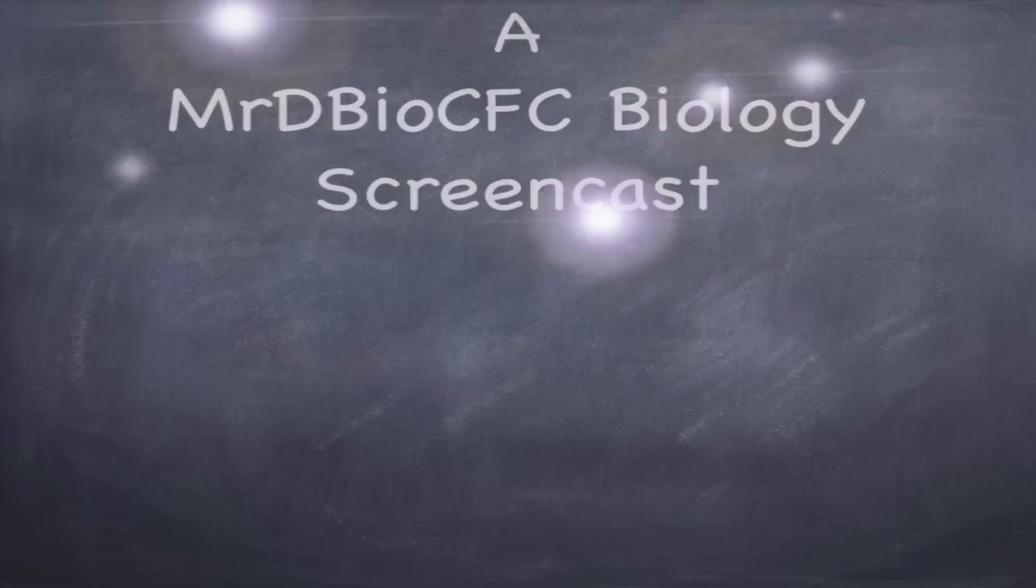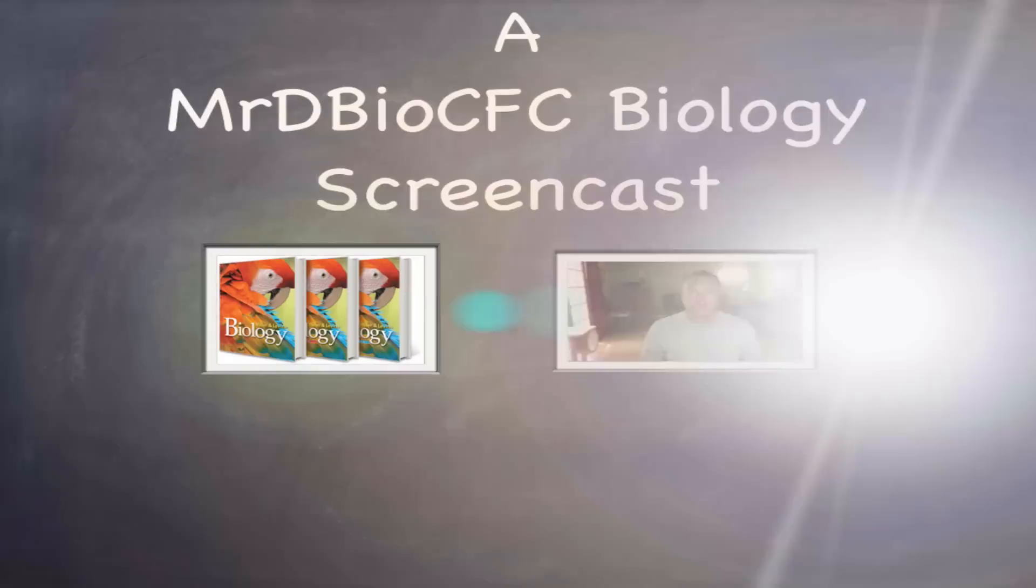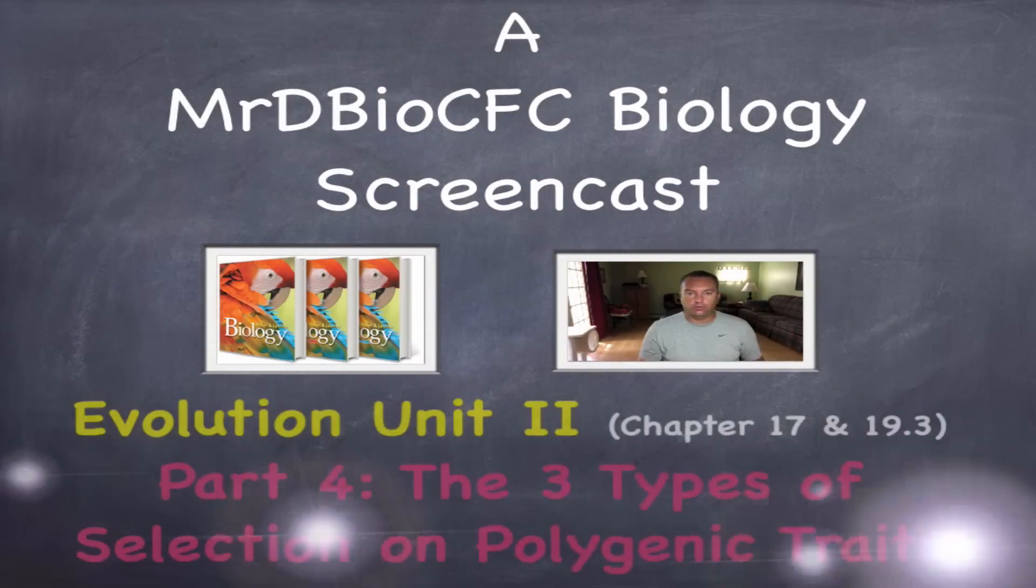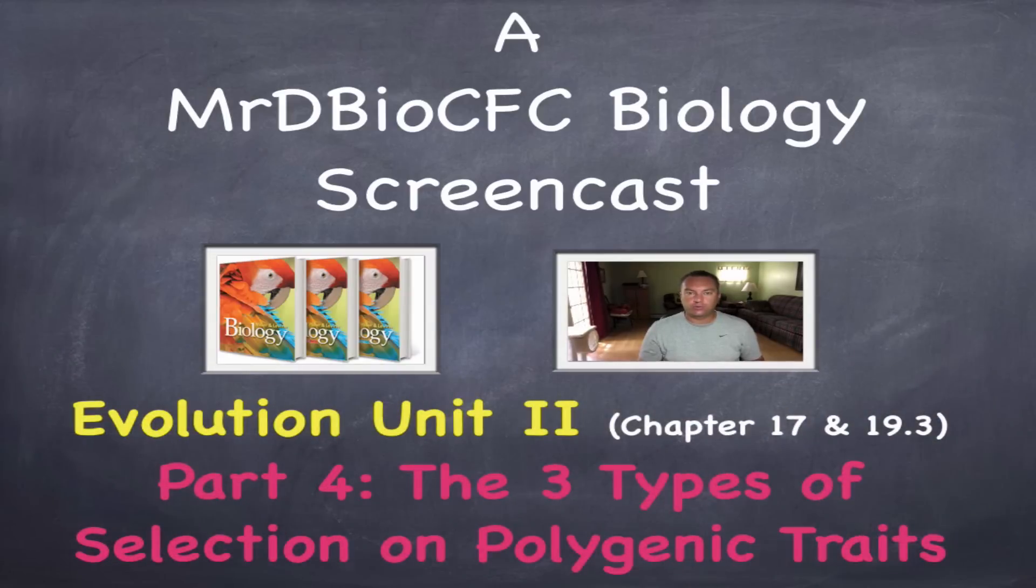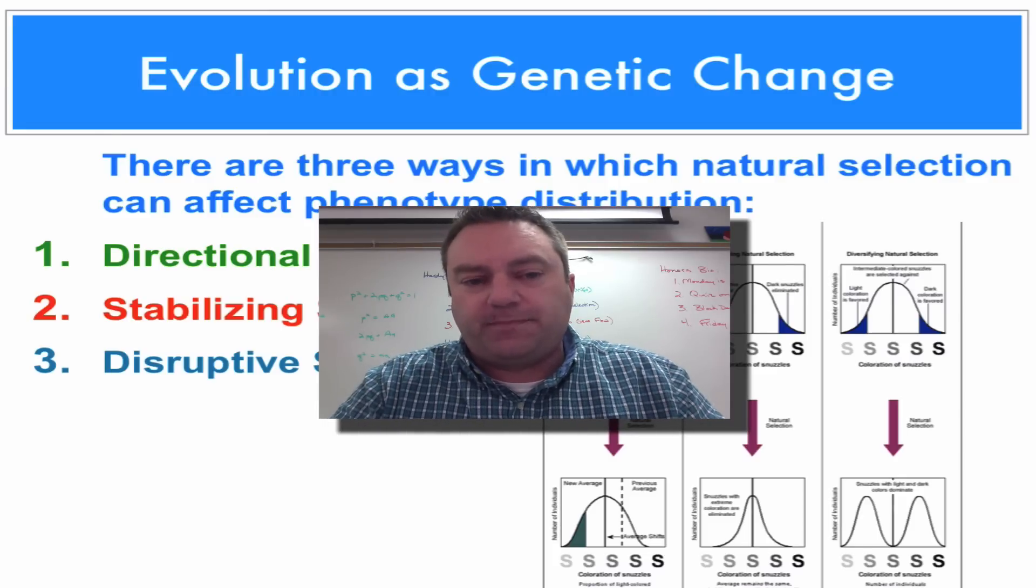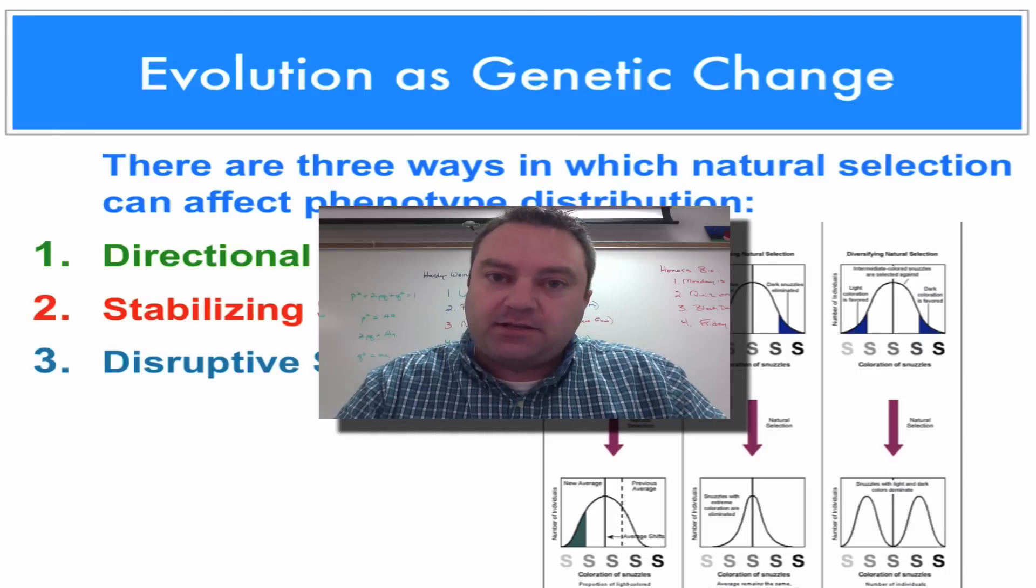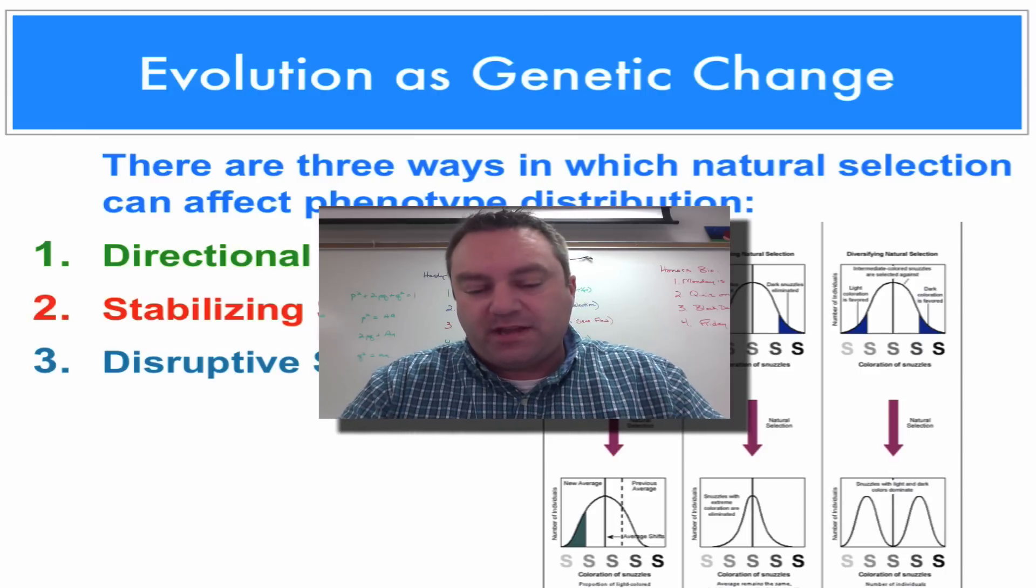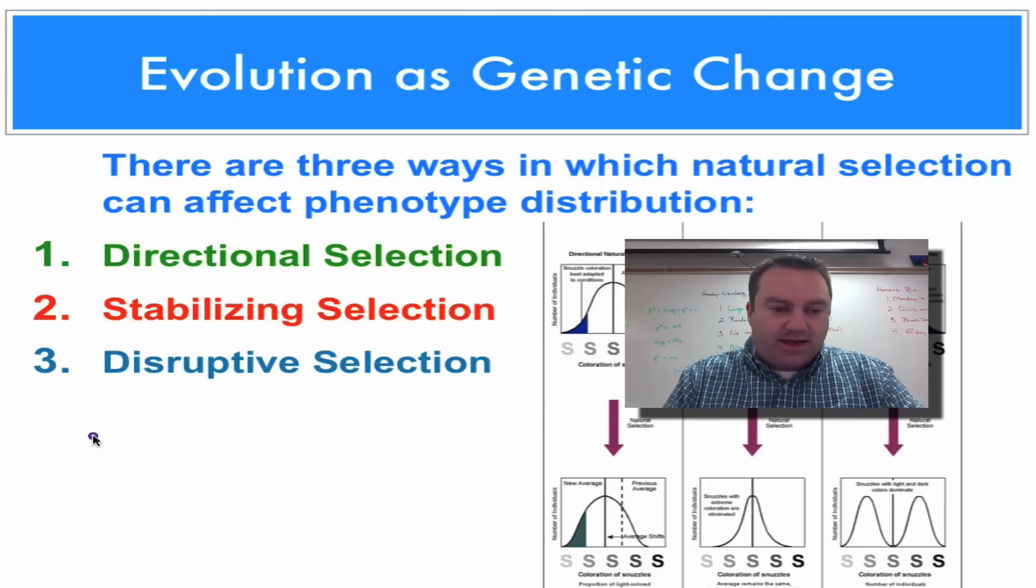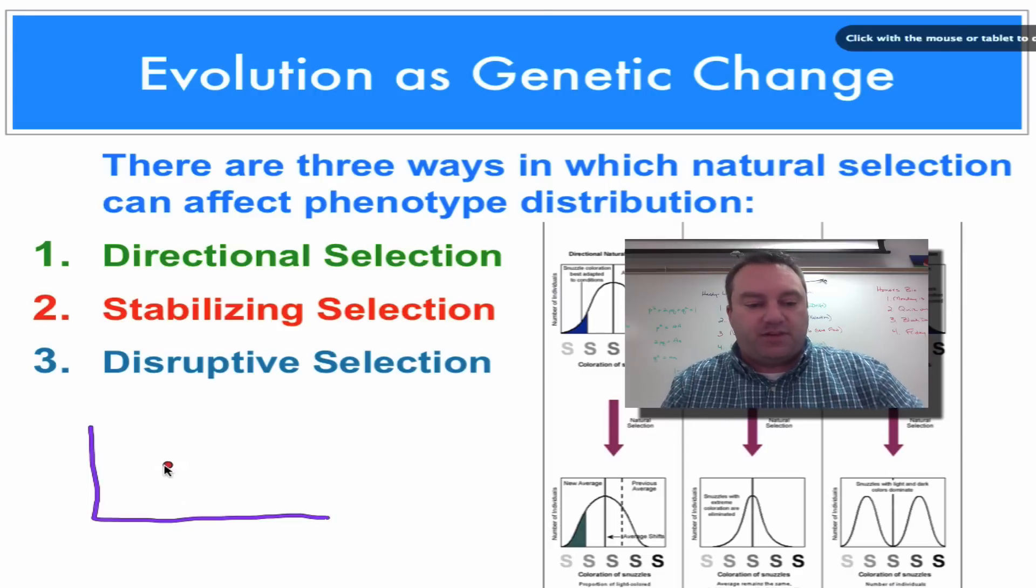Young man, there's no need to feel down, pick yourself off the ground, cause you're in a new town. There's no need to be... Alright, welcome to episode 4 from this series on evolution. And in this episode, we're going to look at how does natural selection affect polygenic traits. Now you want to recall from polygenic traits is that you're going to have a normal distribution of phenotypes.